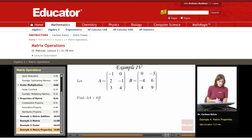So what I need to do is multiply matrix A by negative 3, multiply matrix B by 6, and then add those together.